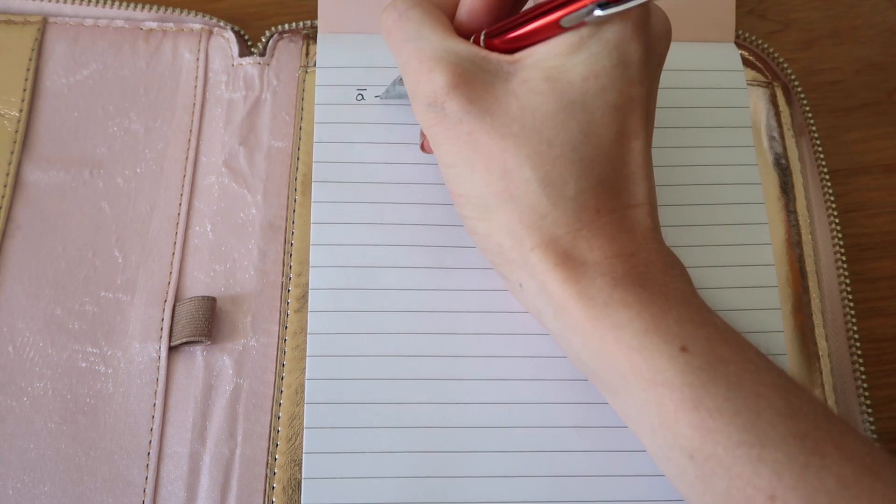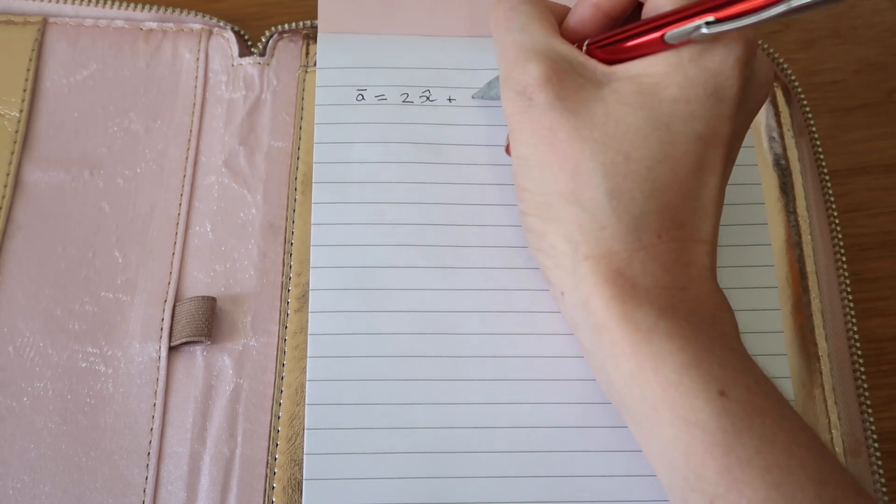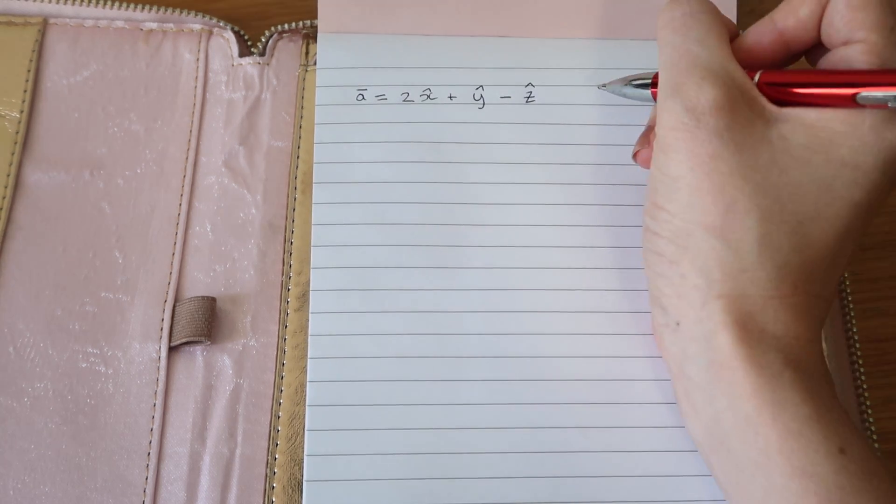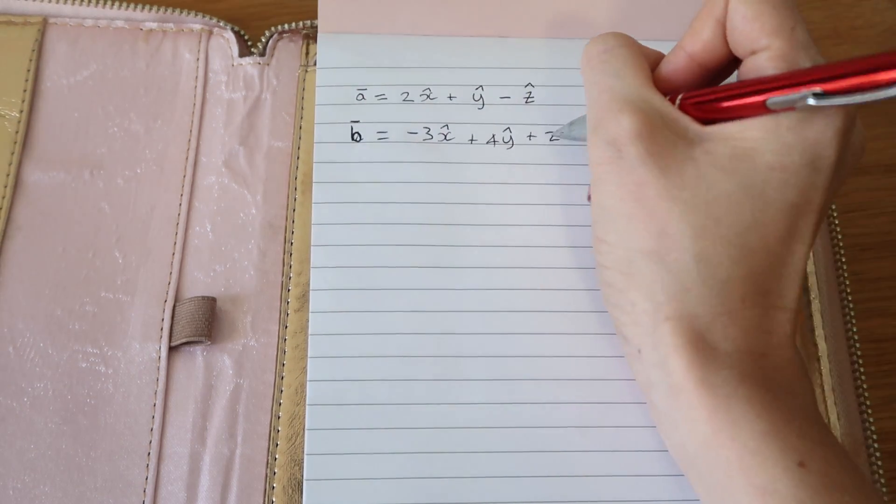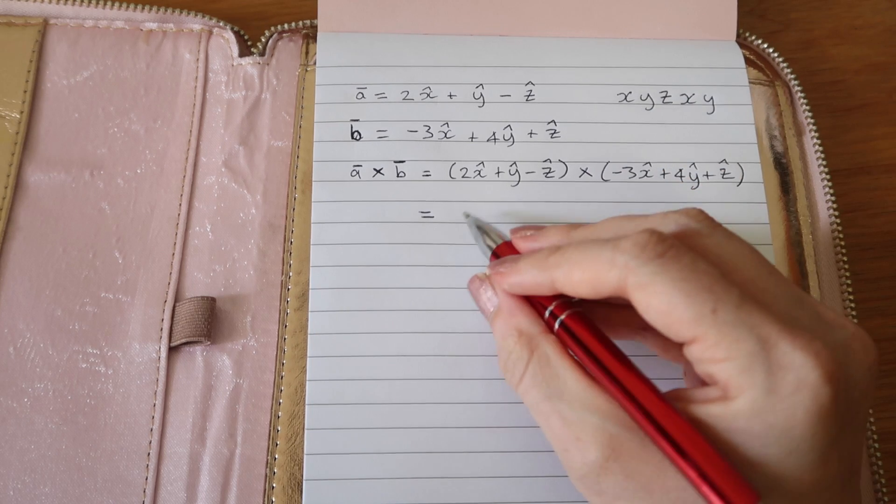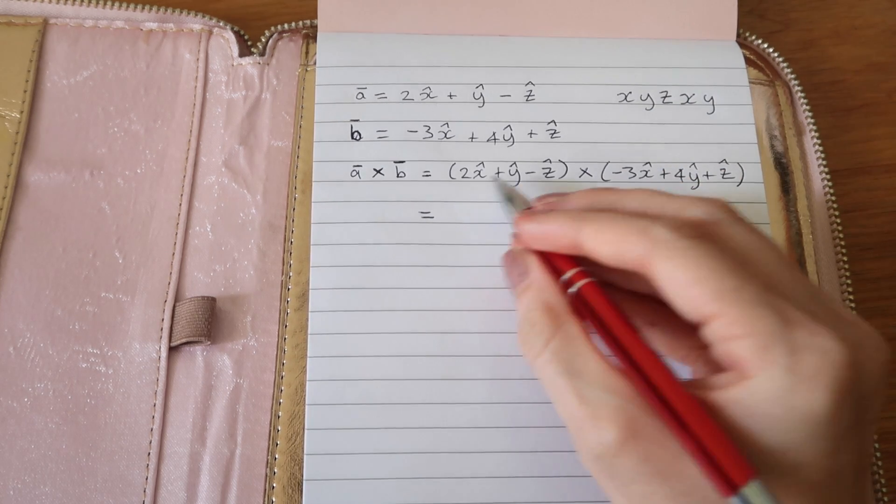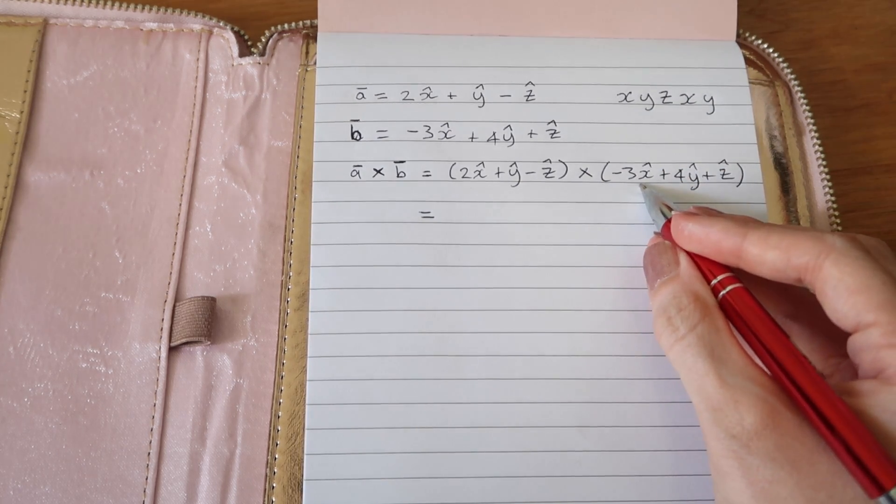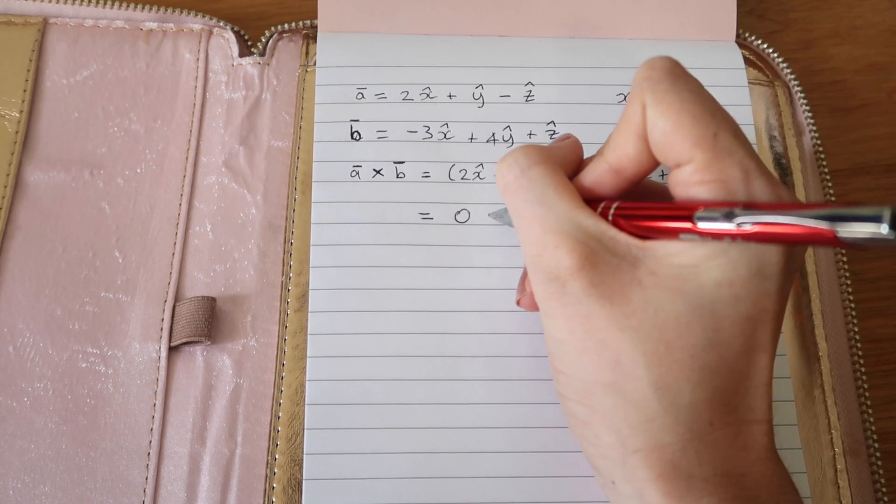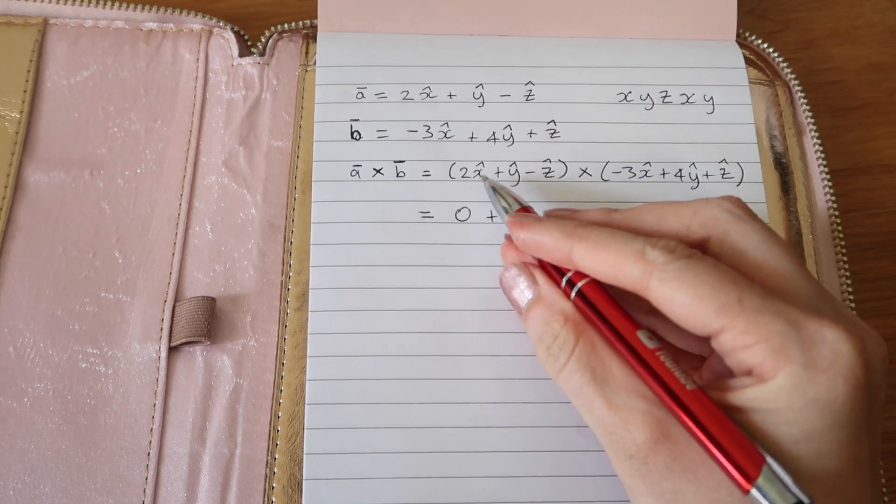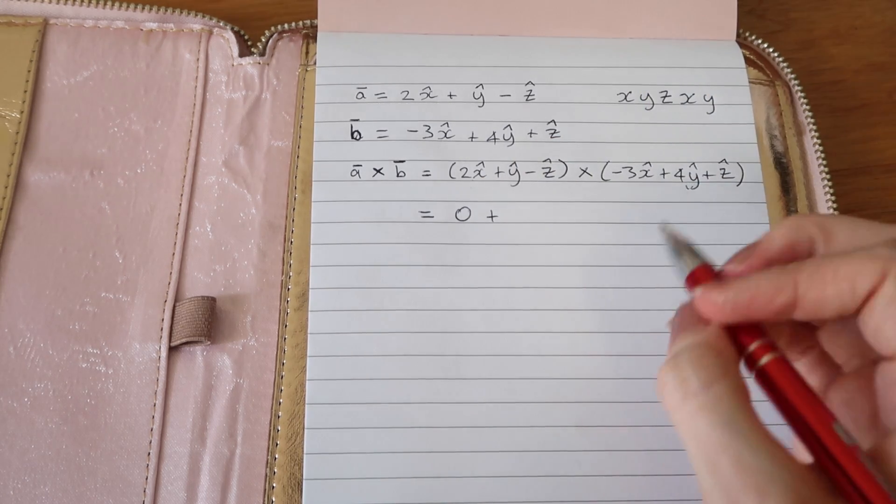As an example of how to take a cross product, say we have two vectors a and b with components in the x, y and z directions. Take the cross product of each term. Two components in the same direction will have zero cross product. But x crossed with y, for example, will give z.